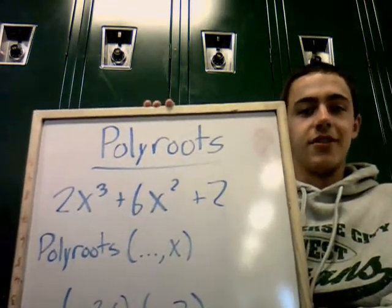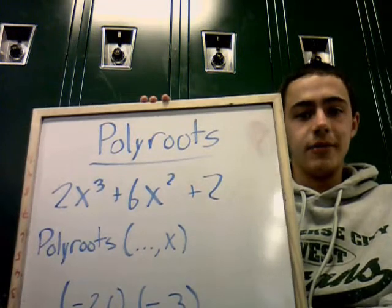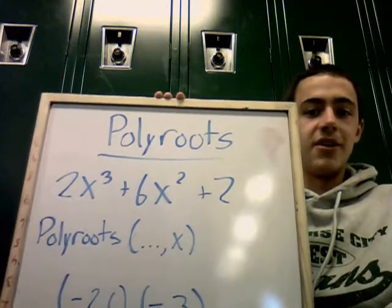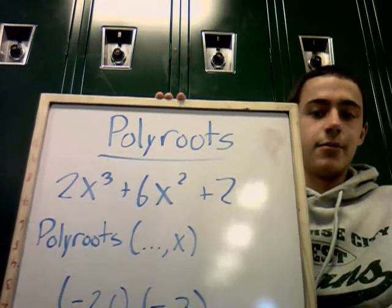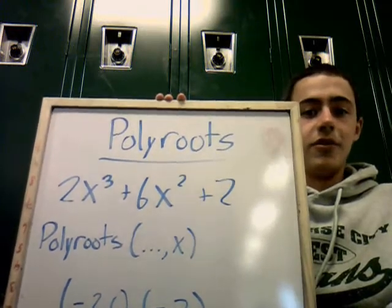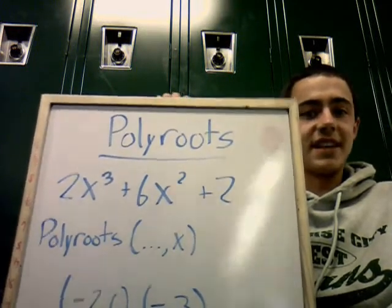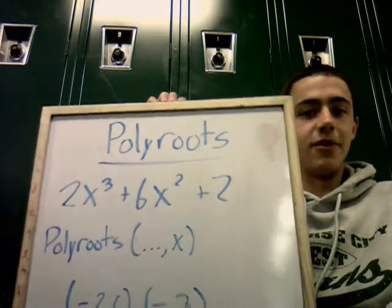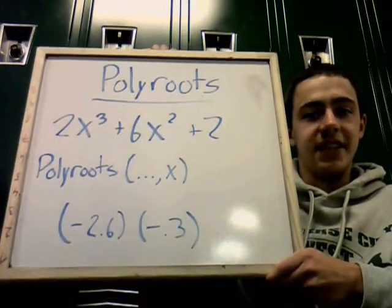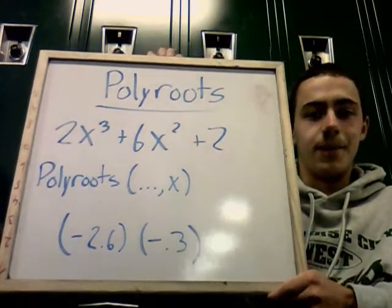On your calculator, you'll type polyroot, parenthesis, your equation, comma, x, closing parenthesis. When you do this, it will automatically tell you where the equation crosses the x-axis — and if it does, this equation crosses at negative 2.6 and negative 0.3.